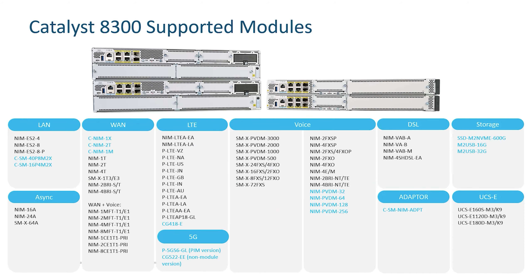These are the wide range of modules supported on the C8300 series. When I talk about NG modules, highlighted in blue are the newly launched NG modules for various connectivity for LAN, WAN, voice, storage, and more. The 5G version is available in a pluggable form factor using Cisco cellular gateway devices. These platforms are built with the idea of investment protection for our customers so that they can reuse most of the modules from the ISR 4K and also upgrade connectivity with the latest NG modules.